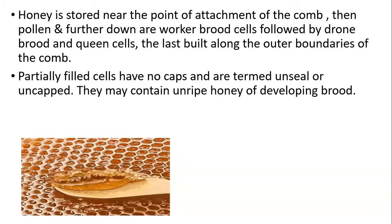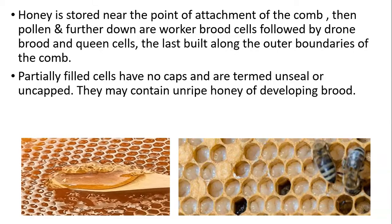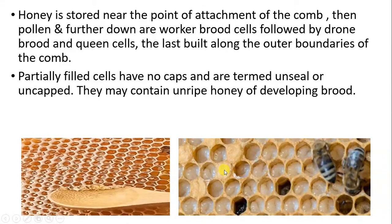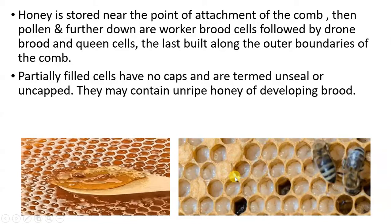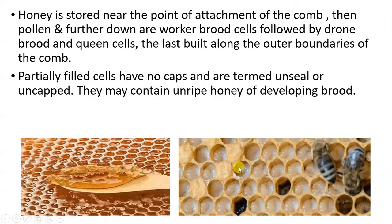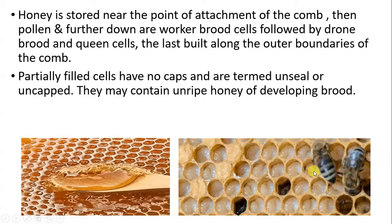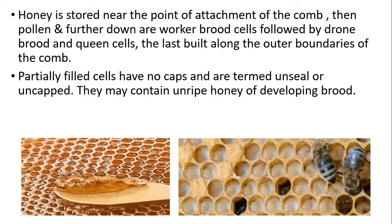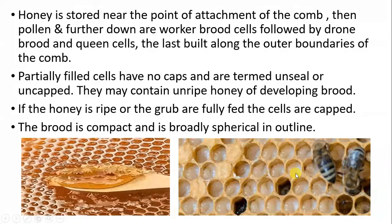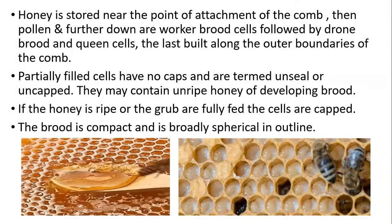Queen cells are present at the boundary of the hive. Some cells are capped and some are uncapped — partially filled cells with no caps are termed unsealed or uncapped. These uncapped cells may contain unripe honey or developing brood. When the honey is ripe or the grubs are fully fed, the cells are capped. The brood is compact and broadly spherical in outline.